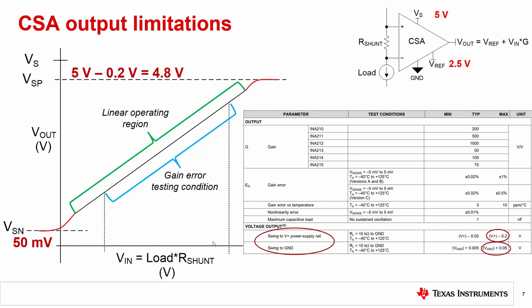Next, we see that the gain error is specified for an input range of negative 5 millivolts to positive 5 millivolts over temperature. Since the INA210 has a gain of 200 volts per volt and is offset with a 2.5 volt reference, this means that the gain error is tested from 1.5 volts to 3.5 volts. Remember that Vout always equals Vref plus Vn times G.